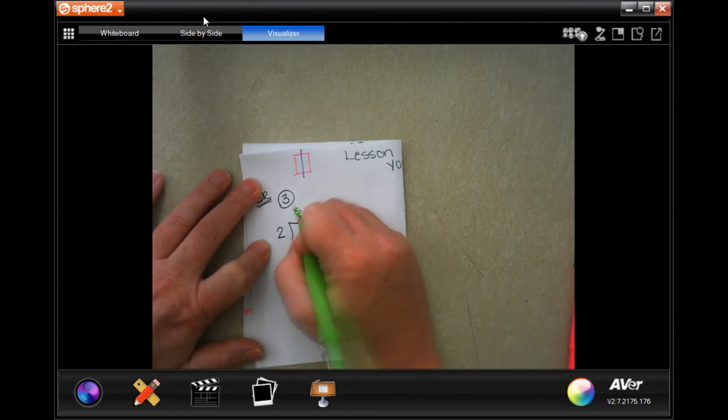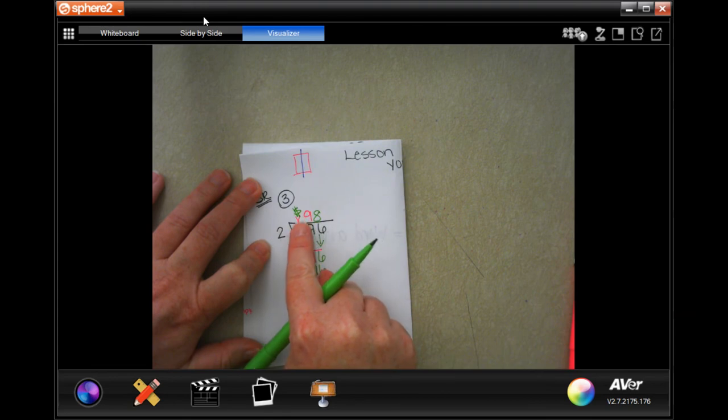8 times. 8 times 2 is 16. Subtract and get 0. On this one, your dollar sign is your label. So, $98.